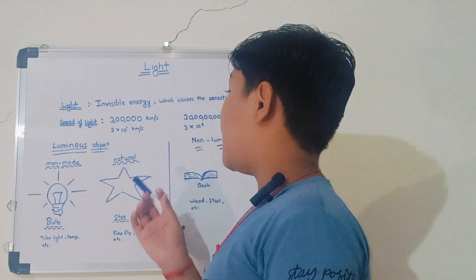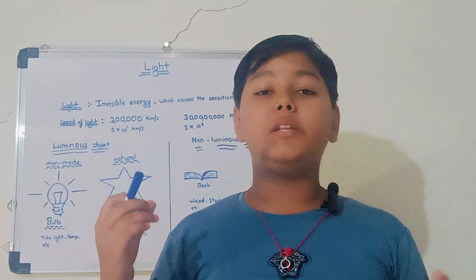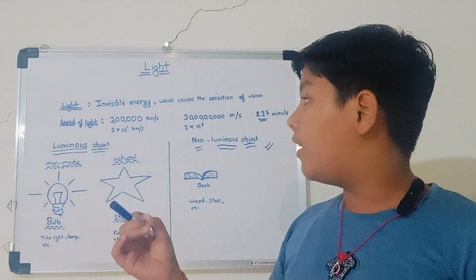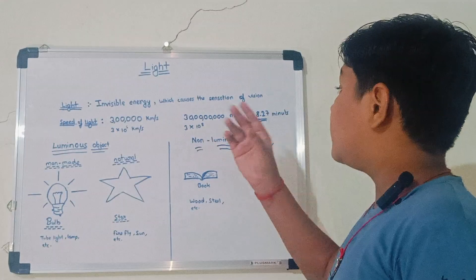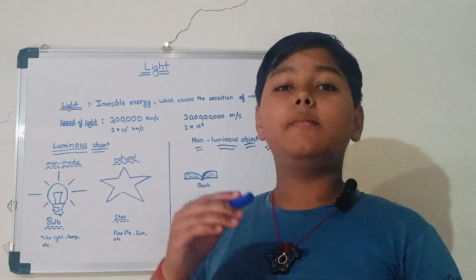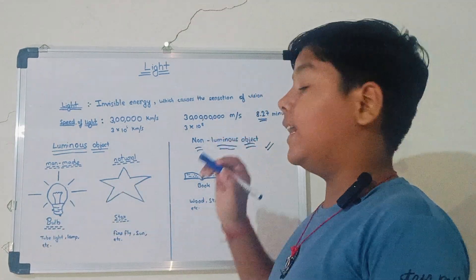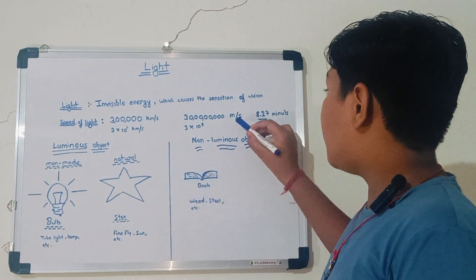Or 3 multiplied by 10 power 5 km per second is the speed of light in km per second. And in m per second it is 30 crore or 3 multiplied by 10 power 8 is the speed of light in m per second in vacuum.